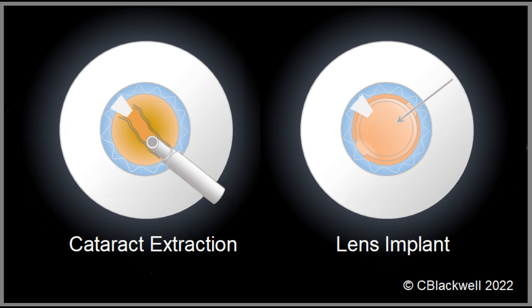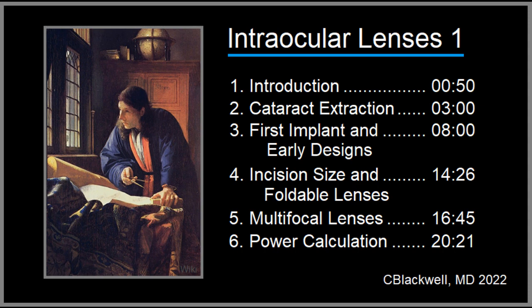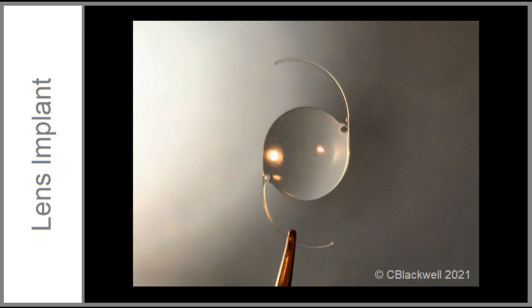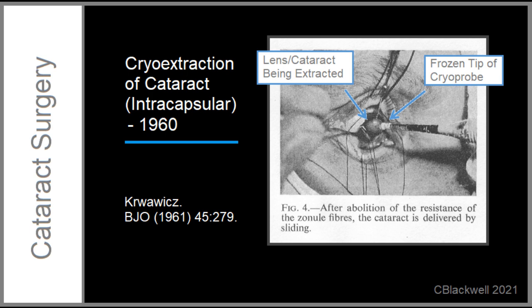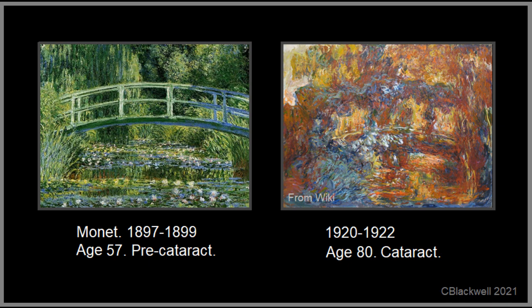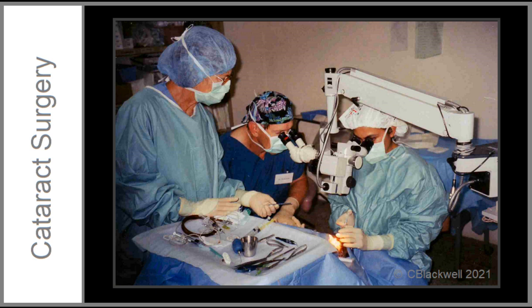Even though the subject of these videos is the lens implant, the big improvements in cataract surgery have come on two fronts: the surgical procedure to remove the lens and the development of the lens implant. Up to the middle of the 20th century, cataract surgery was less than terrific. The procedure to remove the lens was not very refined and rehabilitation of vision was very basic, so much so that the decision for surgery occurred when vision was reduced to the point where there was nothing to lose.